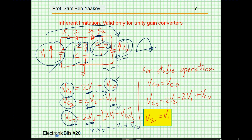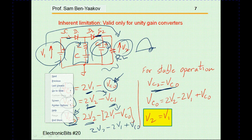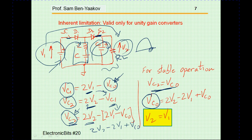This is the final voltage. Now, if we want this converter to be stable, we require that the final value of the capacitor voltage Vc sub two equals the initial value Vc sub zero — this ensures stability. Substituting Vc sub zero for Vc sub two, the Vc sub zero terms cancel out, and we find that V1 equals V2. So this converter is useful only for unity gain — one-to-one operation.